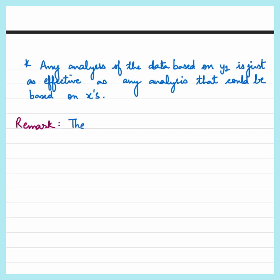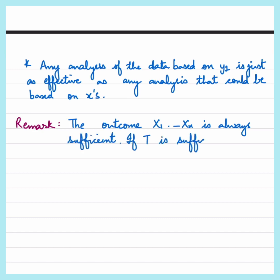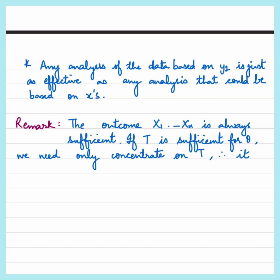Here's an important remark: the outcome (x1, x2, ..., xn) is always a sufficient statistic. If T is sufficient for theta, then we need to concentrate only on T, since it incorporates all the information that the sample has about theta.